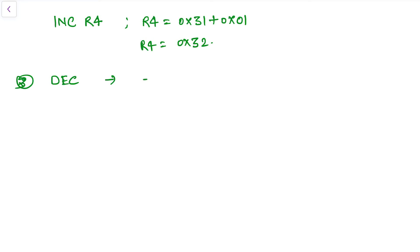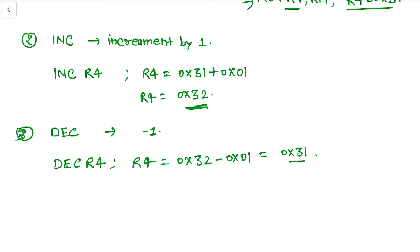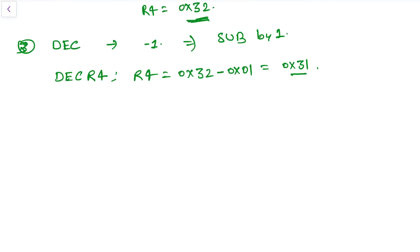DEC decrements the register by 1. If we apply DEC R4, then R4 will be the updated value 0x32 minus 0x01, which gives 0x31 again. So INC is like add by 1, and DEC is like subtract by 1. Now we are going to take another instruction.